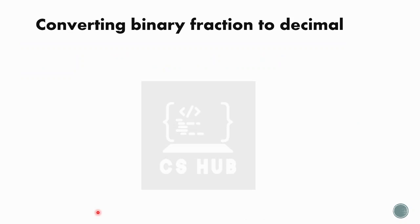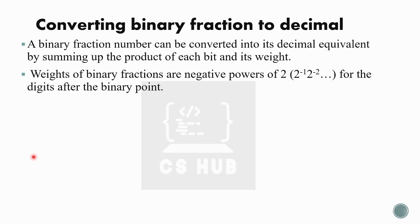Next, converting a binary fraction to decimal. The method is very similar — the only difference is the weights used for the fractional part. For integer numbers, weights start from 2 raised to 0 and increase to the left of the decimal point. For fractional numbers, the digits to the right of the decimal point use negative powers: 2 raised to −1, 2 raised to −2, and so on.